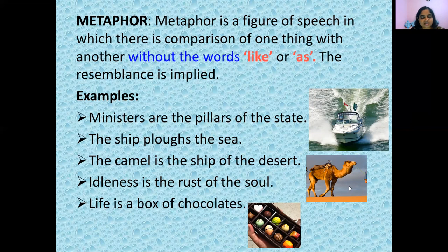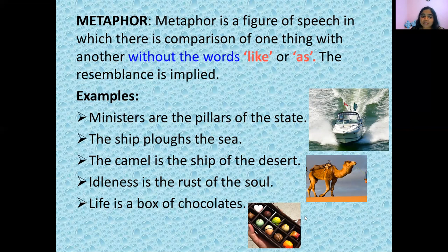Last example: 'Life is a box of chocolates.' Life is compared to a box of chocolates, meaning life is very short — once the chocolates are finished, they are gone. So life is compared to a box of chocolates. Metaphor is a comparison between two objects without using 'like' or 'as.' Hope you understood what metaphor is.